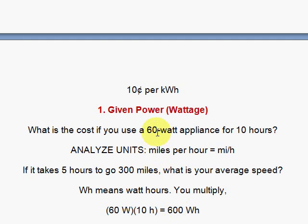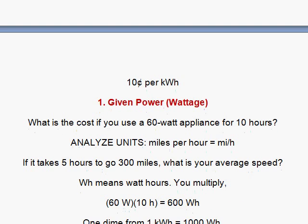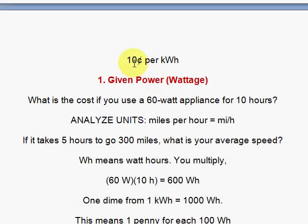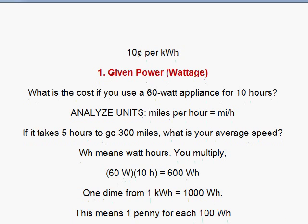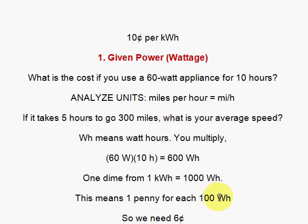It says watt hours. You multiply the watts times the hours. My watts 60, my hours 10. 60 times 10, 600. See the units go with it. Watt times hours. Just like here, miles per hour if you divide. Per means divide. Here watt hours, just multiply. And then once when I do that it says I have to pay one dime for a thousand of those. Kilo means a thousand. One dime for a thousand watt hours. That means one penny for each hundred watt hours. But I have 600. So I have six times that. The answer is six cents.